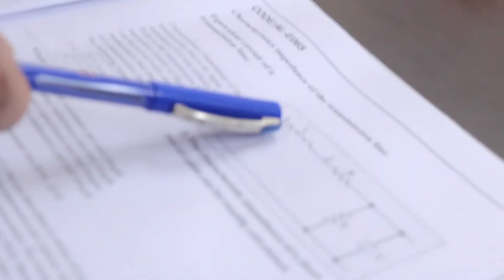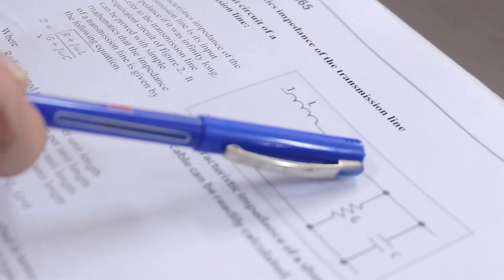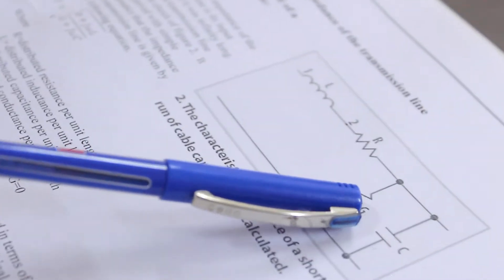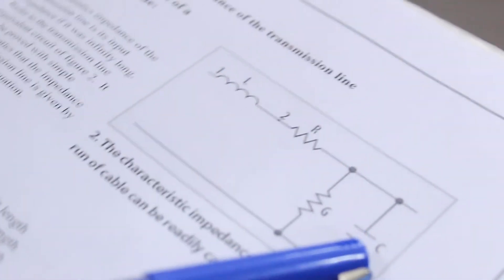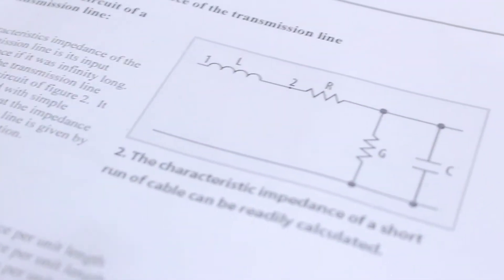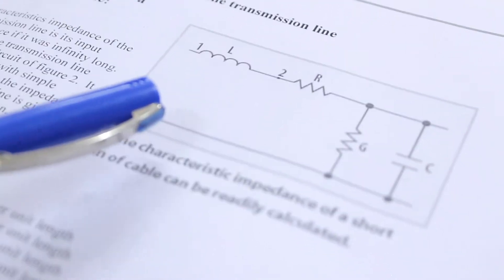We are keeping the output as open as well as short. Once we measure the input parameters when the load end is open circuited, and again we read the input parameters when the load end is short circuited. From the equivalent circuit diagram of transmission line, as we know we have four parameters.